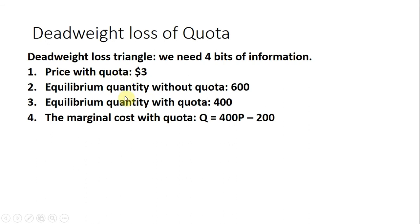We need the equilibrium quantity without the quota, which is 600, and the equilibrium quantity with the quota, which is 400. Then we need to find the marginal cost — we need to evaluate the supply equation at the level of the quota.